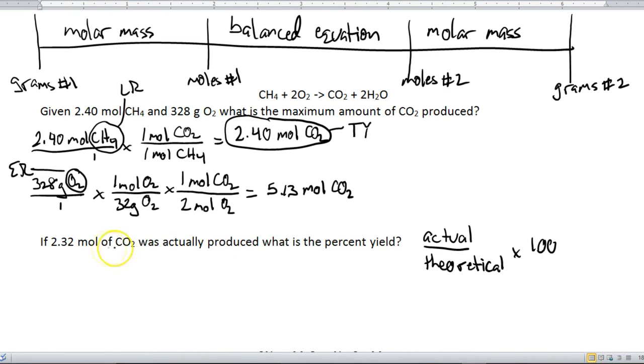Alright, so let's actually do this calculation right here. So we're going to take our actual yield, which is 2.32 divided by the theoretical yield, which we calculated in the previous question, 2.40 times 100, and you do that calculation and it comes out to be 96.7%, right? And that's rounded to three sig figs, because the number that you're given also has three sig figs. Alright, it's really that easy. That's how theoretical yield and percent yield works.